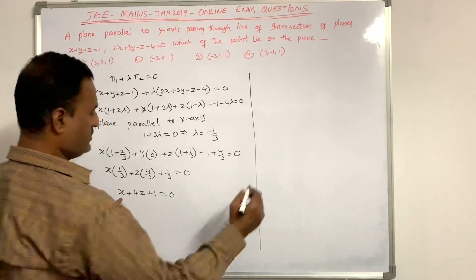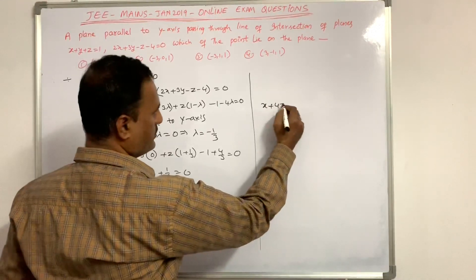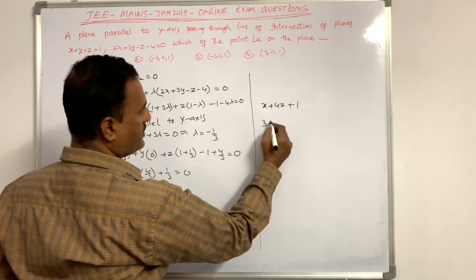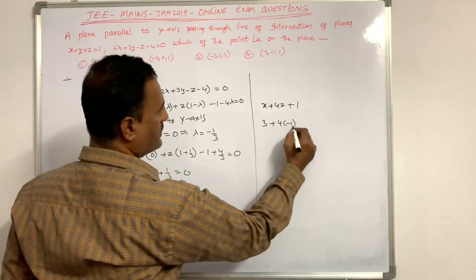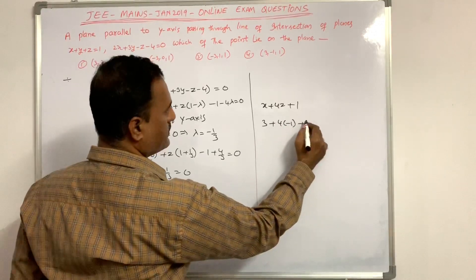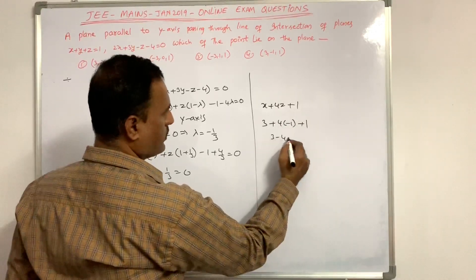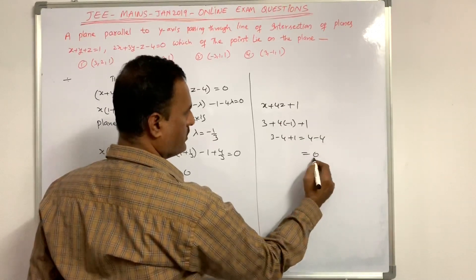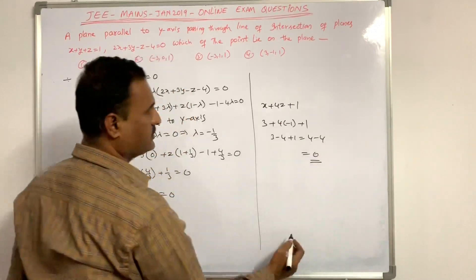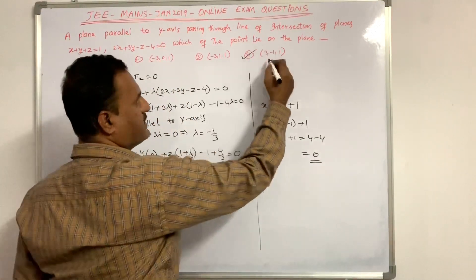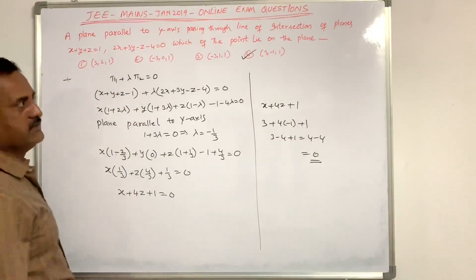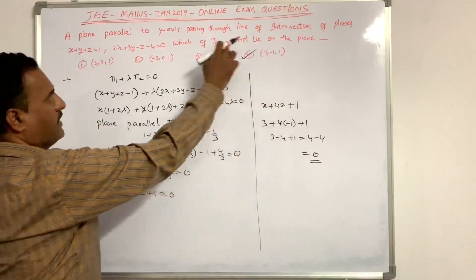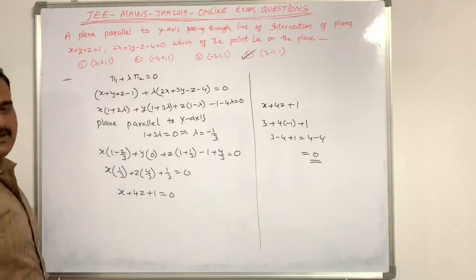For the fourth option, substituting into x + 4z + 1: 3 + 4(-1) + 1 = 3 - 4 + 1 = 0. The fourth option is satisfied. Therefore the point (3, -1, 1) lies on the plane.